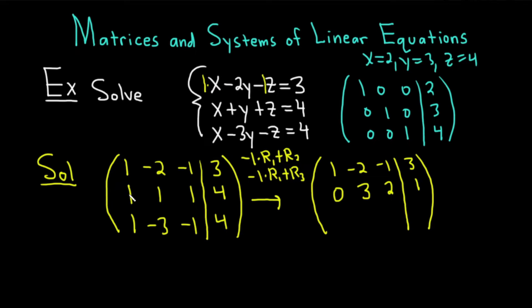Again, negative 1 plus 1 is 0. 2 plus 1 is 3. 1 plus 1 is 2. Negative 3 plus 4 is 1. Now we're doing negative 1 times row 1 plus row 3. Negative 1 plus 1 is 0. 2 plus negative 3 is negative 1. Because negative 1 times negative 2 is 2 plus negative 3 is negative 1. 1 plus negative 1 is 0. Negative 3 plus 4 is 1. That was a lot of work there. That was pretty tough.